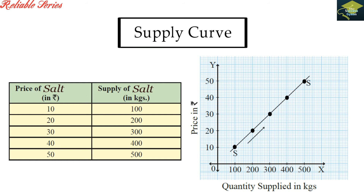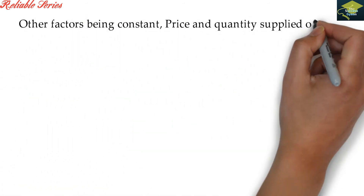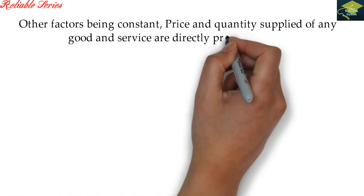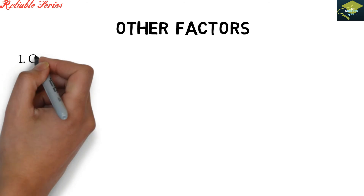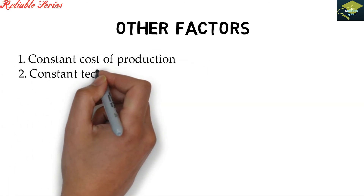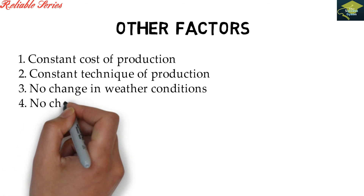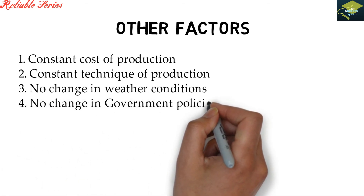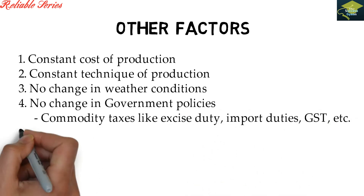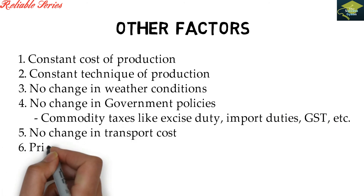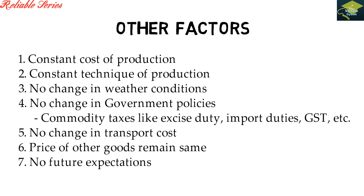तो जैसा हमने देखा, law of supply states that other factors being constant, price and quantity supplied of any good and service are directly proportional. यहाँ other factors हैं: 1. Constant cost of production, 2. Constant technique of production, 3. No change in weather conditions, 4. No change in government policies — commodity taxes like excise duty, import duties, GST, etc., 5. No change in transport cost, 6. Price of other goods remains same, 7. No future expectations.